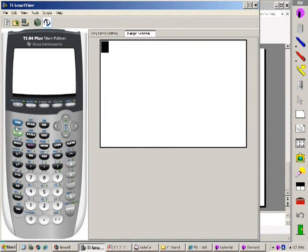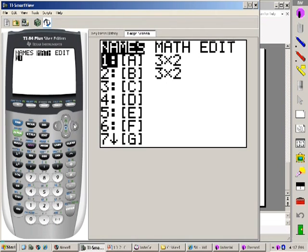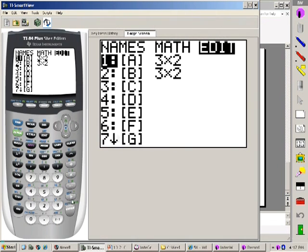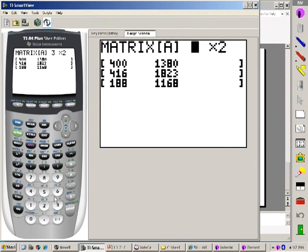Let's enter this data into our calculator. The way we do that is we want to put it into a matrix, which is right here. So we'll press second, matrix. The first thing we have to do is edit. So go over to edit, we'll edit matrix A, and we'll type in our data. You can see I have the data typed in here: 400, 1380, 416, 1823, 188, and 1168.